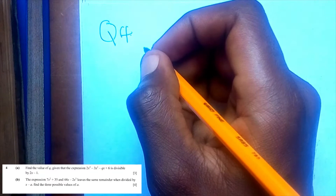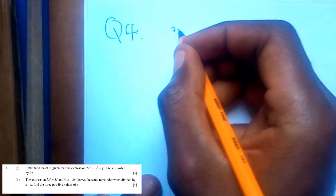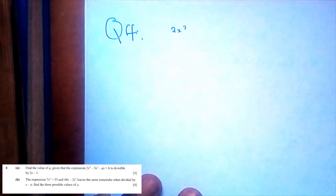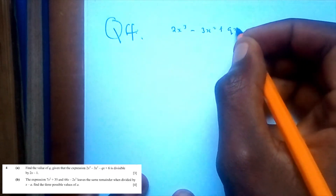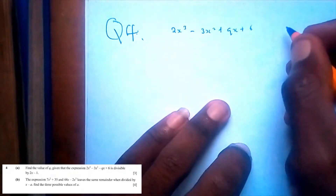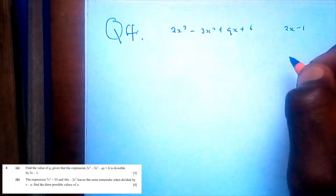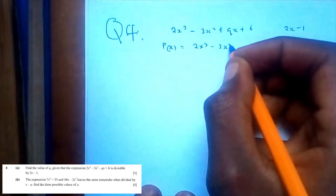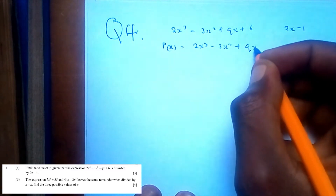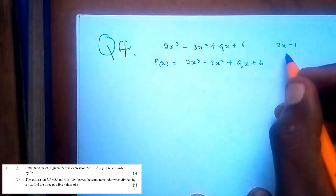Question 4 reads: find the value of q, knowing that the expression 2x cubed minus 3x squared plus qx plus 6 is divisible by 2x minus 1. I'll write this as a function: p(x) equals 2x cubed minus 3x squared plus qx plus 6.